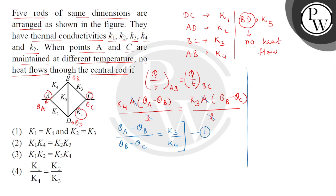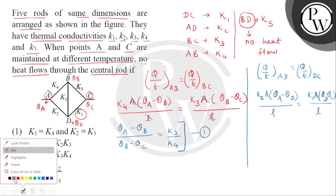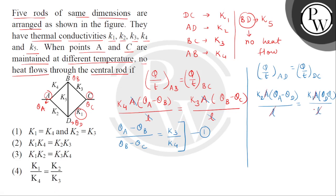Similarly हम right side में check कर सकते हैं — right side में हमारे पास rod AD and DC हैं. अगर दोनों के through heat flow का rate same हो जाए, तो हम same condition apply कर सकते हैं. We can write: rate of heat flow through AD equals to rate of heat flow through DC. AD के लिए K2A multiplied by theta A minus theta D divided by L equals to DC के लिए K1A multiplied by theta D minus theta C divided by L. A and L will again cancel, तो हमें ratio obtain करना है: theta A minus theta D divided by theta D minus theta C equals to K1 divided by K2. This is equation number 2.